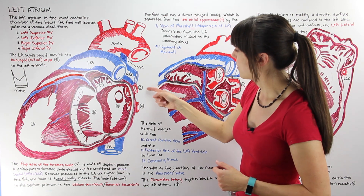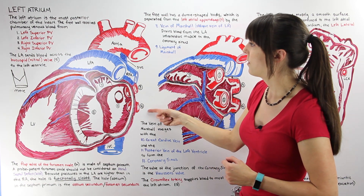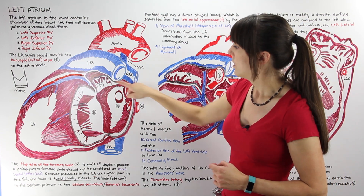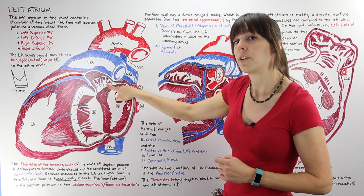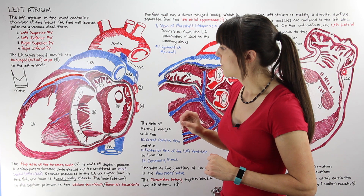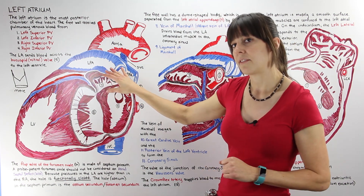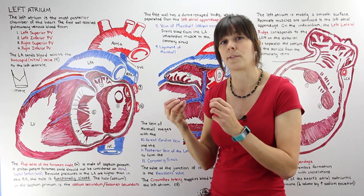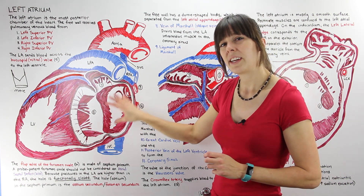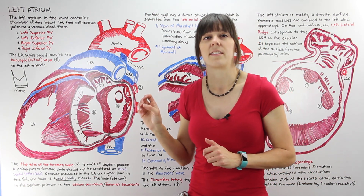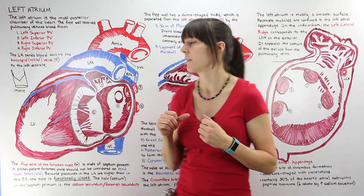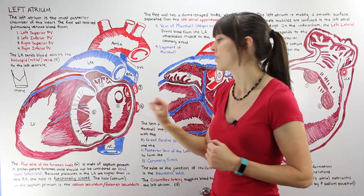We can see the right superior pulmonary vein and the right inferior pulmonary vein. I also want to draw your attention to the left atrial appendage — it has pectinate muscles inside of it, which are those ridged muscles. By contrast, the interior portion of the chamber is mostly a smooth surface, compared to the right atrium which had pectinate muscles in the majority of the chamber. The left atrium, by contrast, is mostly smooth.